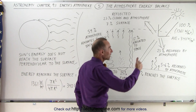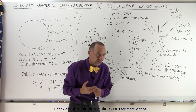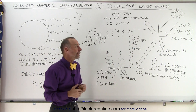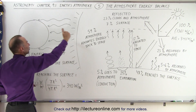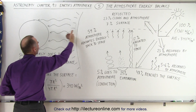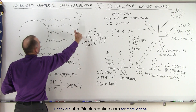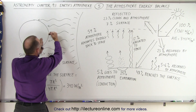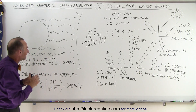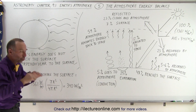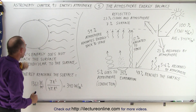We know that by the time the energy of the sun reaches the atmosphere of the Earth, we're talking about an intensity of 1,361 watts per square meter. But since the Earth is a sphere, the sunlight and the energy from the sun doesn't reach the surface perpendicular everywhere — only at the equatorial region. In other regions, farther to the poles, it comes in at an angle, and therefore the intensity of the light is diminished quite a bit.